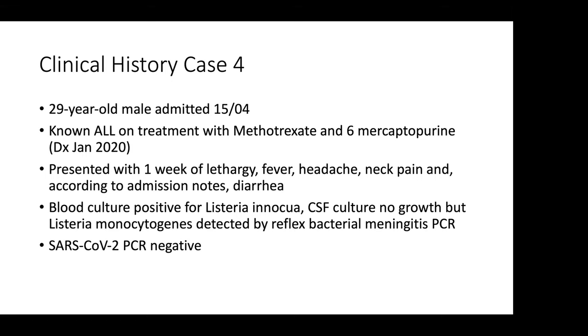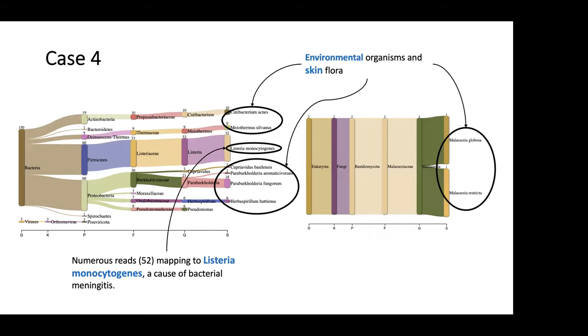And then lastly case four. A 29-year-old male admitted on the 15th of April, known ALL on treatment with methotrexate and 6-mercaptopurine, presented with a week of lethargy, fever, headache, neck pain, and according to admission notes diarrhea. Blood cultures came back positive for Listeria innocua. CSF showed no growth but Listeria monocytogenes was detected on our reflex bacterial meningitis PCR. And SARS-CoV-2 ultimately was negative.